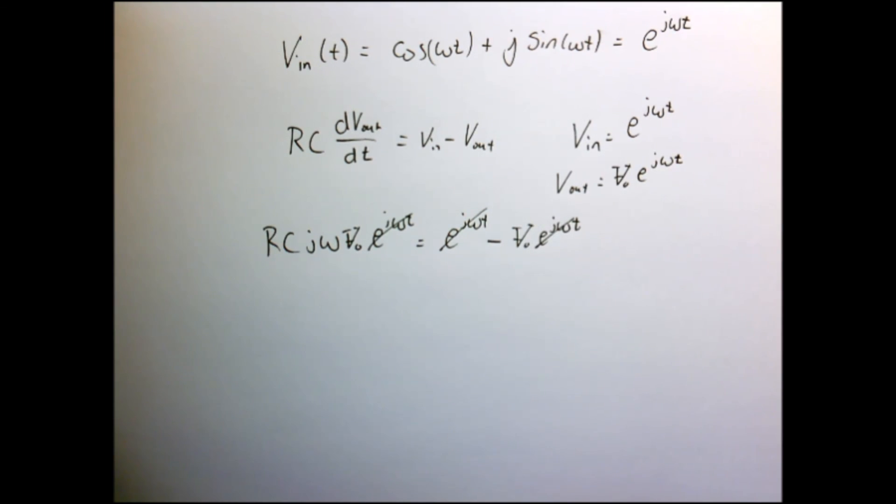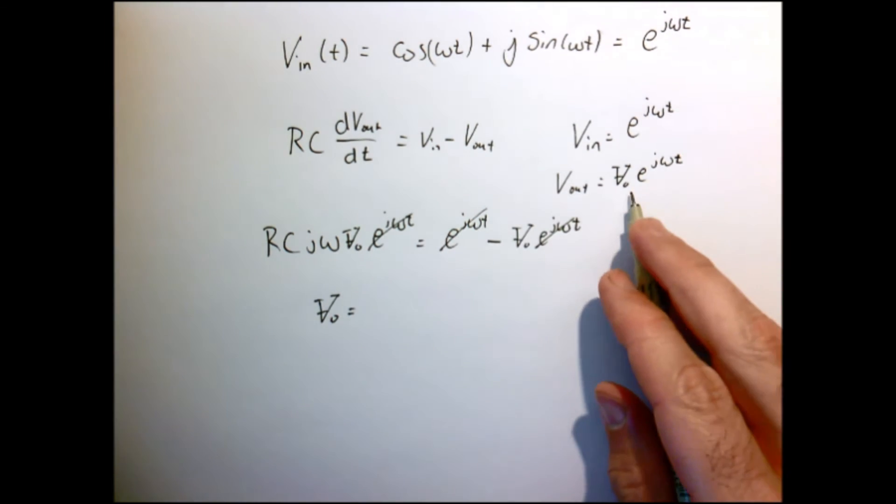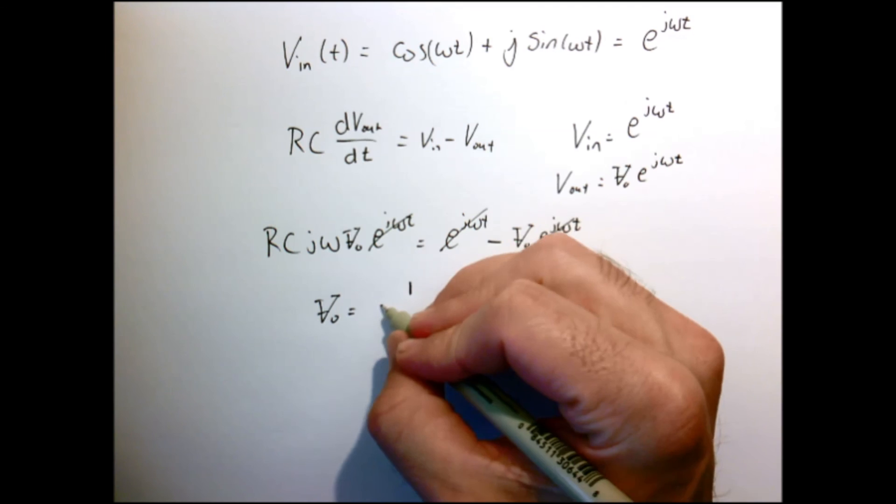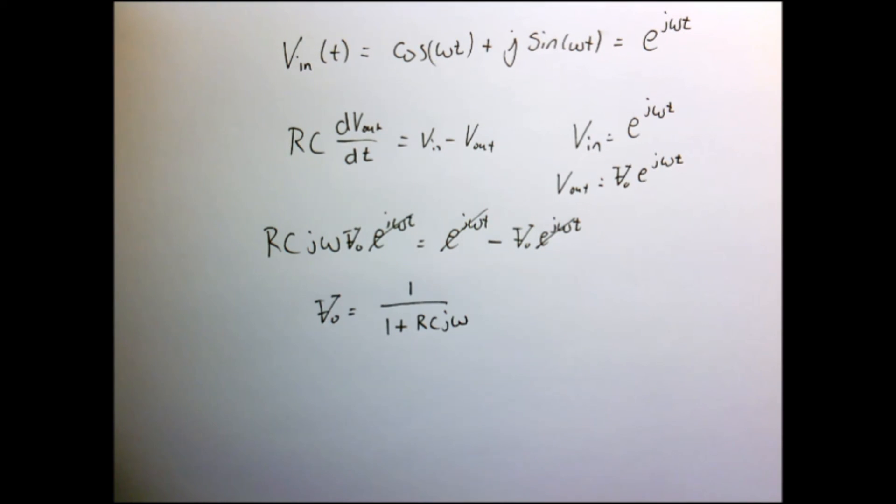So now I've just substituted everything in using my e to the j omega t notation. My e to the j omega t is just simply cancel out.